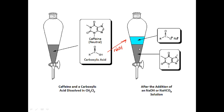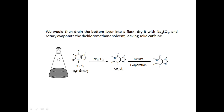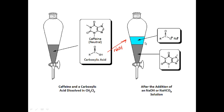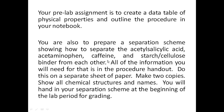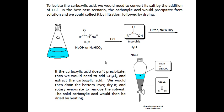We'll remove the carboxylic acid into the aqueous layer and keep the caffeine in the dichloromethane layer. We then separate out the dichloromethane layer, dry it with sodium sulfate as we did in the cloves experiment, and then rotary evaporate off the dichloromethane to give us the caffeine. By separating into aqueous and organic layers, we can isolate caffeine simply by removing the organic layer, drying, and rotary evaporating.